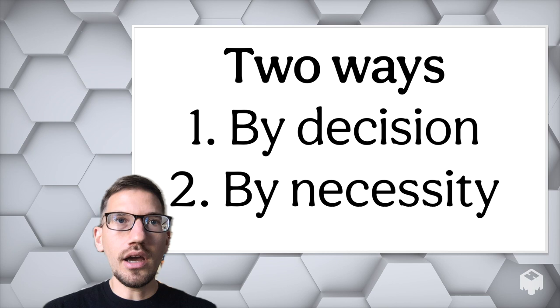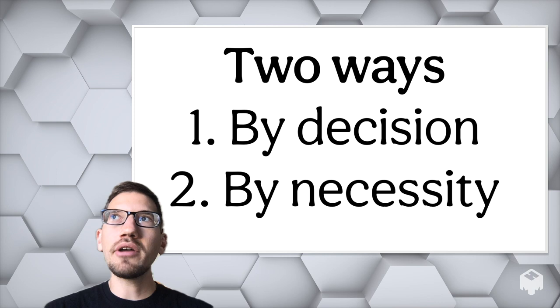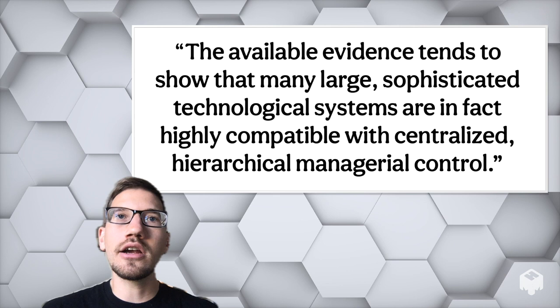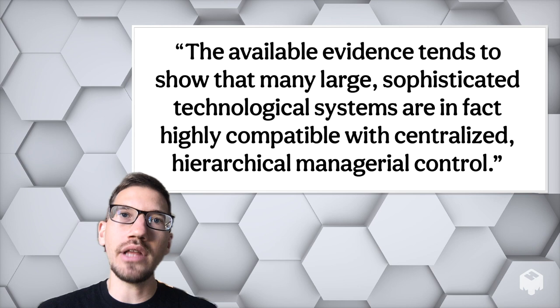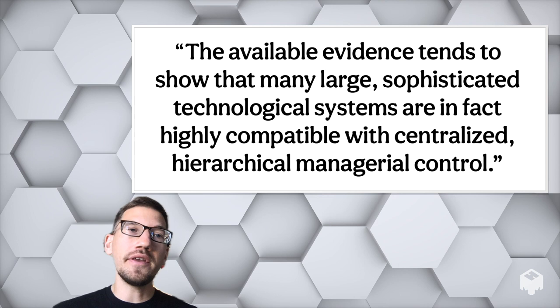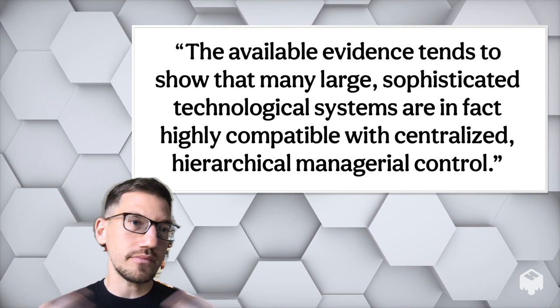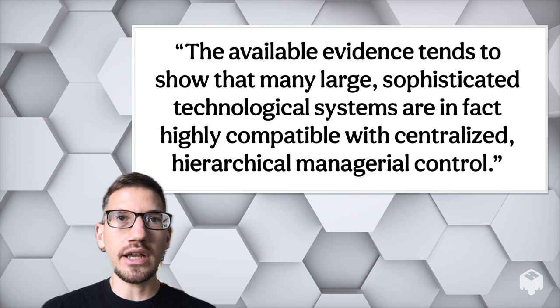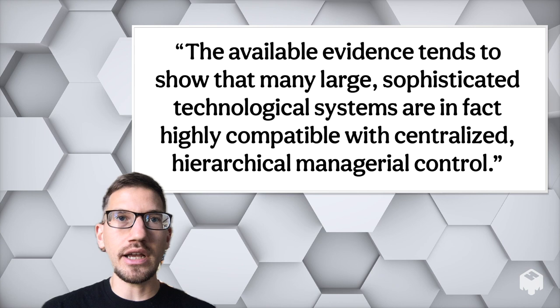One of his main arguments is that when we talk about the complex, big technologies today, they mostly fall under 'by necessity.' Here's a quote from the paper: 'The available evidence tends to show that many large, sophisticated technological systems are, in fact, highly compatible with centralized, hierarchical, managerial control.' A lot of our technologies we use every day — from computers to political systems — are so big and unwieldy that they kind of require top-down centralized control. If we want them to be more distributed, well, there's a mismatch.